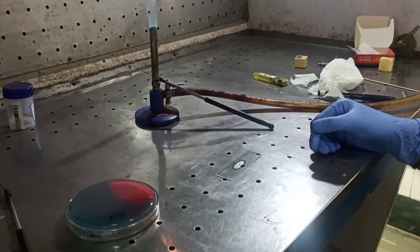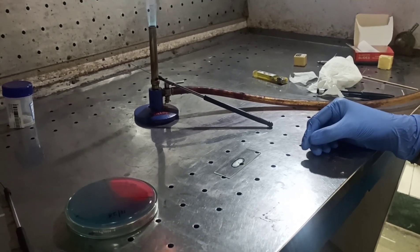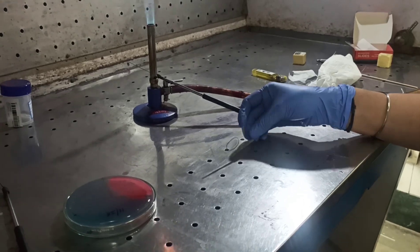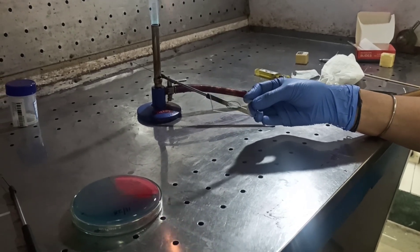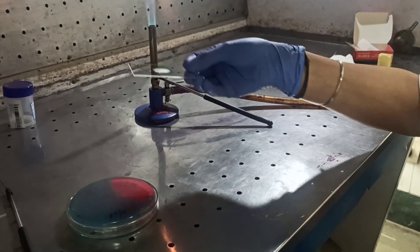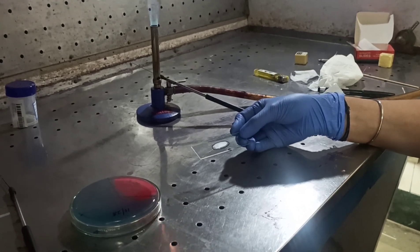Dried smear is heated gently by flaming the slide from underneath. This is done to fix the smear.